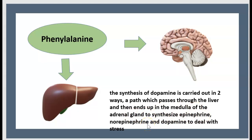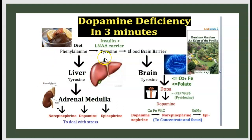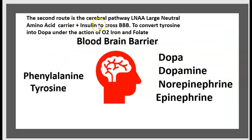Food gives phenylalanine to the liver, the liver gives tyrosine, tyrosine goes to the adrenal gland, and the adrenal gland synthesizes dopamine, epinephrine, and norepinephrine. The second route is the cerebral pathway, where phenylalanine and tyrosine cross the blood-brain barrier and are converted to dopamine, norepinephrine, and epinephrine.